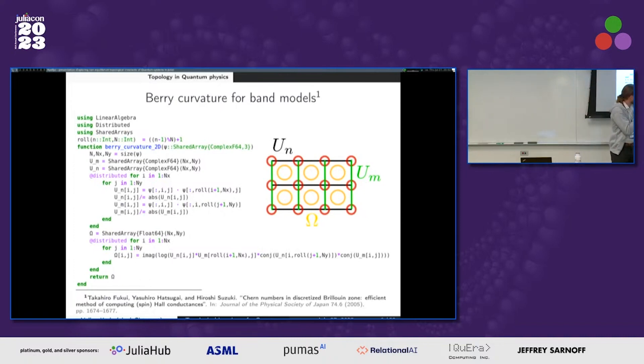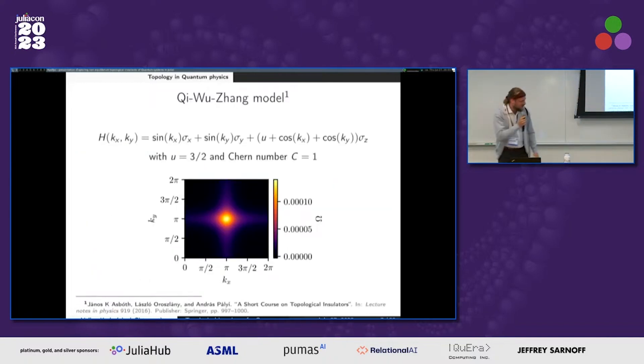So you have these little cells, and basically what you want to know is what is the flux? These yellow rings, what is the flux through each cell? And you can do this in a parallelized fashion in this way. I cannot go into this, but you see it's rather simple.